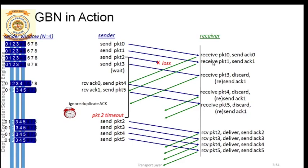If the receiver is not sending the proper acknowledgement - like in this case - the receiver is not sending ACK 3 even if he is receiving packet 3. He is not sending ACK 3 because he is not getting packet 2; he has not received the packets in order. So instead of ACK 3, he is resending acknowledgement ACK 1.